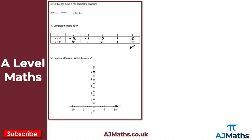For part (b) it says 'hence or otherwise, sketch the curve C.' We just use the table above. Plotting the points: we have (minus 8, 4), (minus 1, 1), (0, 0), (1, 1), and (8, 4). So minus 8 on the x-axis, up 4; then minus 1 and 1; then the origin; then 1 along and 1 up; and finally 8 along and 4 up.